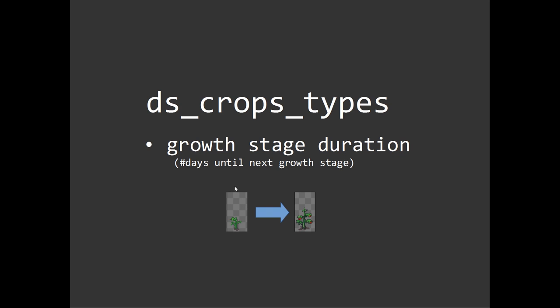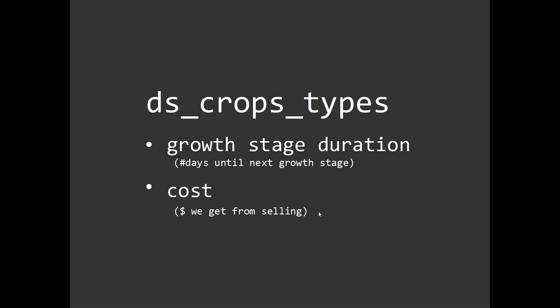So if we have a plant in growth stage number two, the growth stage duration refers to the number of days it takes until it gets to the next growth stage. This would be represented in the game by going to a new sprite. A crop that takes longer to grow is going to have a longer growth stage duration and we can set this as different numbers for different crops. The second thing we're going to define is its cost — how much do we get from selling it.